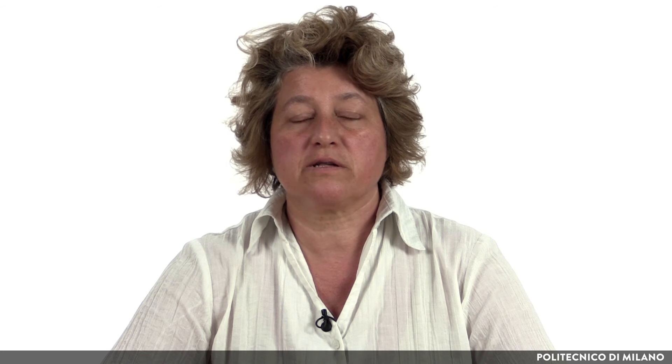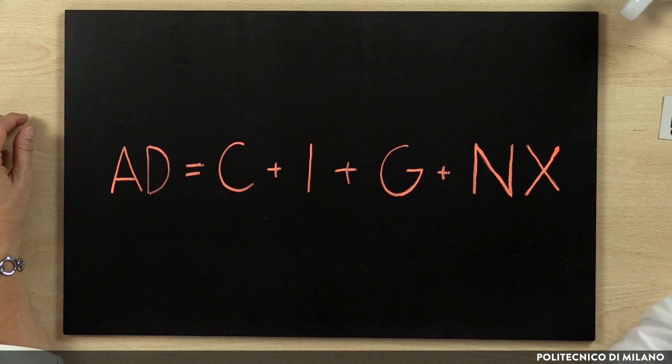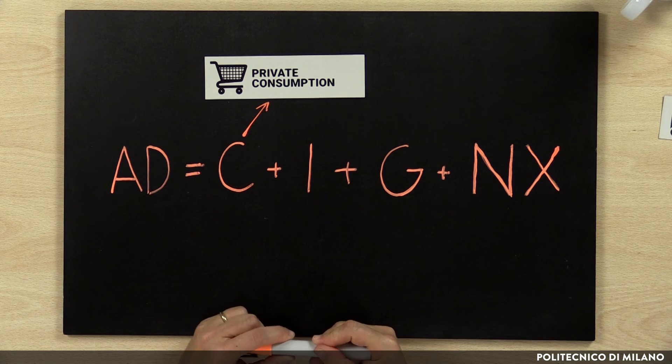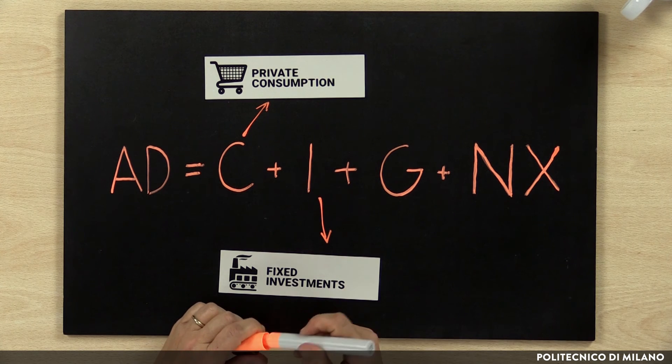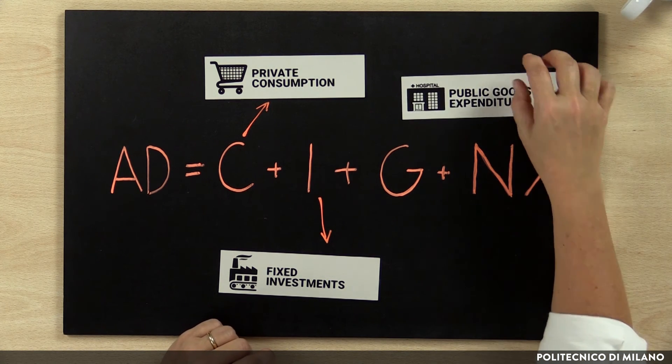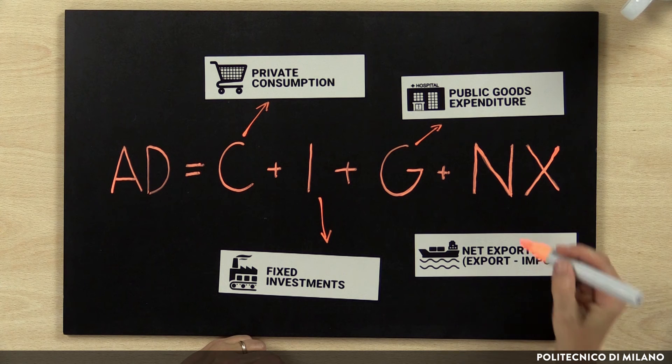Aggregate demand depends on individual choices of consumers, of firms, of the public administration, deciding how much to buy according to their income, according to their future production plans, or according to their budget constraints. In aggregate demand, consumption represents private consumption by households demanding goods and services to satisfy their needs. Instead, investments are made essentially by firms with the aim of expanding their production capital. Public expenditures are done by the government to provide public goods to the public, while net exports are given by the difference between goods exported and goods imported by the country from the rest of the world.